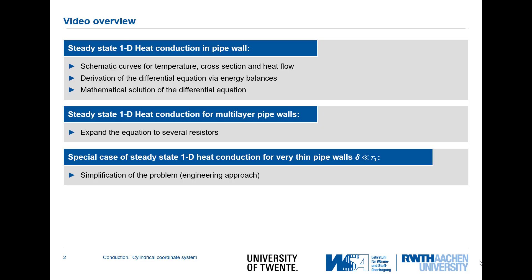Let's start with a little overview. First we will look at the steady-state one-dimensional heat conduction in a pipe wall. We will look schematically at how the temperature profile looks due to the changing cross-section and the constant heat flow. Then we will derive the differential equation via energy balances for the temperature profile. With the mathematical solution of the differential equation we finally obtain the temperature profile.